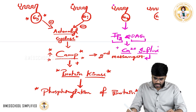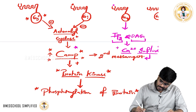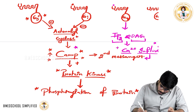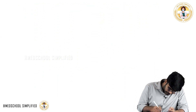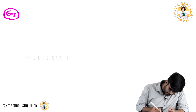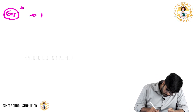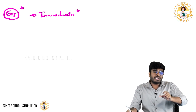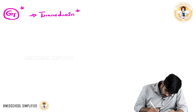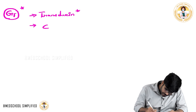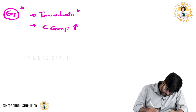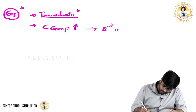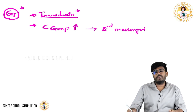So how many types of secondary messengers have we seen? Two types: the first is cAMP, and the second is the IP3-DAG-calcium system. Now for Gt — T for transducin: whenever you activate the GPCR in which the Gt component is present, it will increase cGMP levels. cGMP is also a secondary messenger and brings out the necessary changes inside the cell.